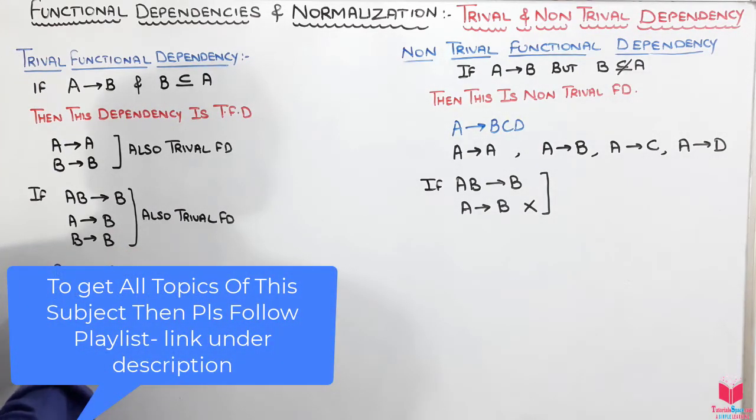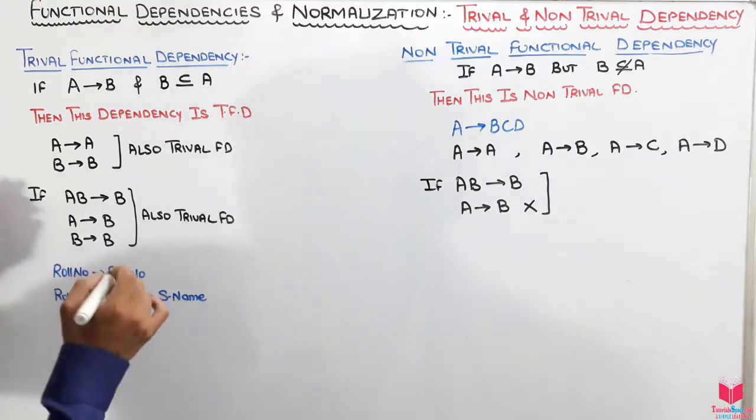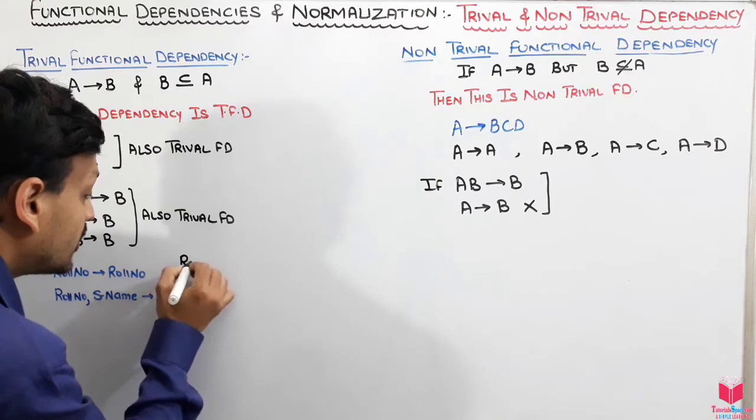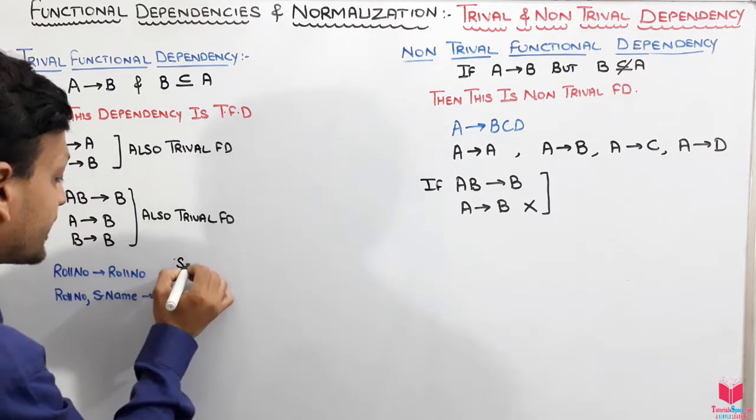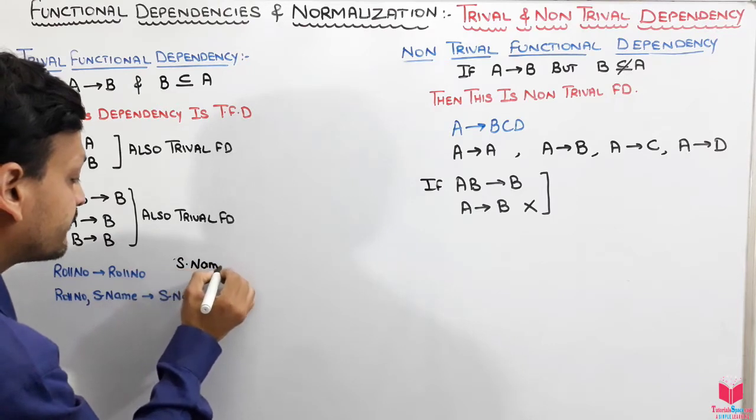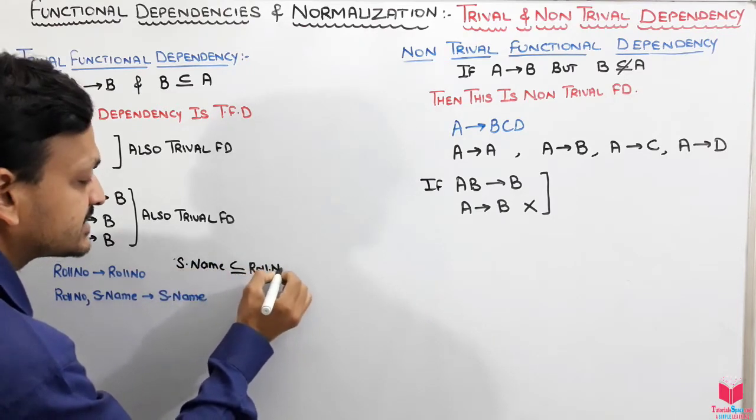Let's say an example, if we have a row number, from row number to row number, we can find it. If we have given that row number and S name, then from row number and S name, we can find the S name. But it is also given that S name subset of row number.